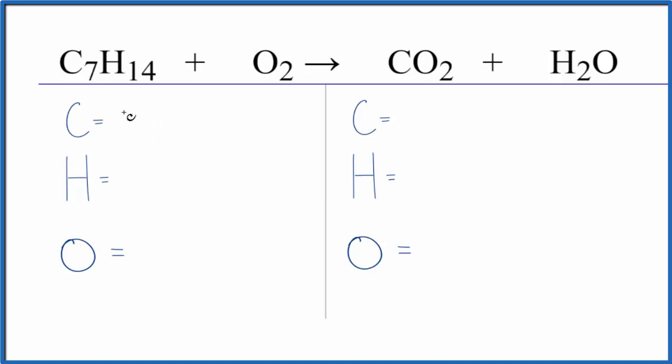Let's count the atoms up on each side and balance the equation. Seven carbon atoms, 14 hydrogen atoms, and two oxygen atoms. On the product side, one carbon, two hydrogens, and then two oxygens. Don't forget we have one oxygen here with the water, so we have three.